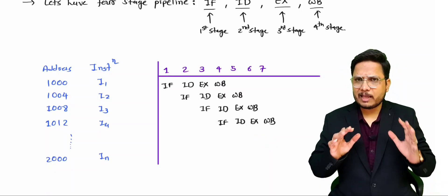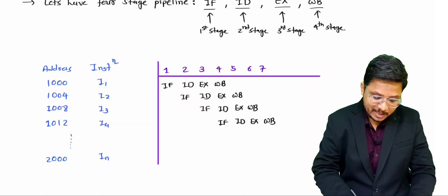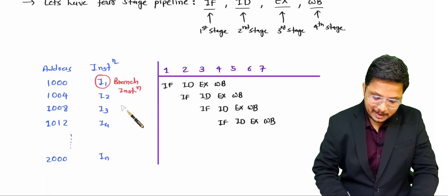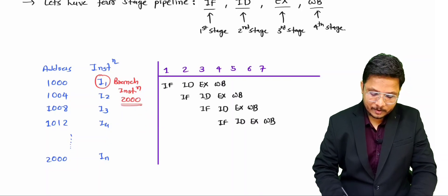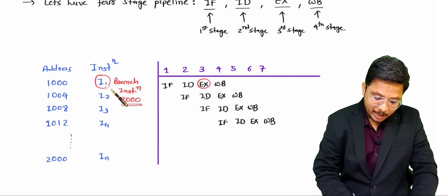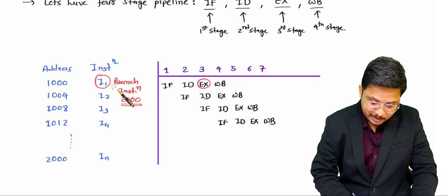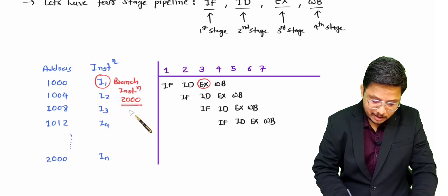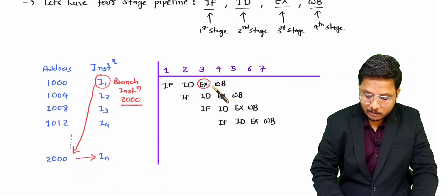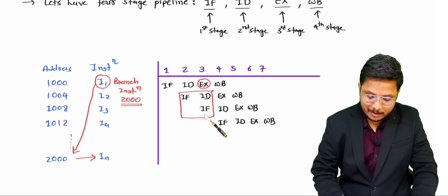This is how normal execution happens — there is no hazard here. But a hazard will happen during a branch instruction. Let us consider that instruction I1 is a branch instruction, and the branch target is at address 2000. During the Execute stage of the branch instruction, the pipeline identifies what the target location should be. So after I1, the processor should jump to address 2000 and execute the IN instruction. But at that point, the subsequent instructions have already been fetched and partially processed in the pipeline.